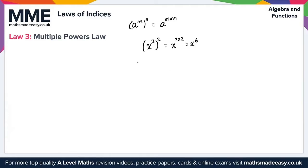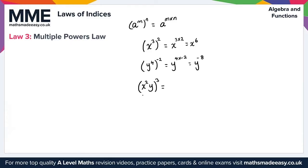Applying the multiple powers law with negative numbers: y to the power of 4 raised to the power of minus 2 gives y to the 4 times minus 2, which simplifies to y to the minus 8. With multiple variables — say (x squared times y) raised to the power of 3 — we treat each variable separately: x to the 2 times 3 gives x to the 6, and y to the 1 times 3 gives y cubed.